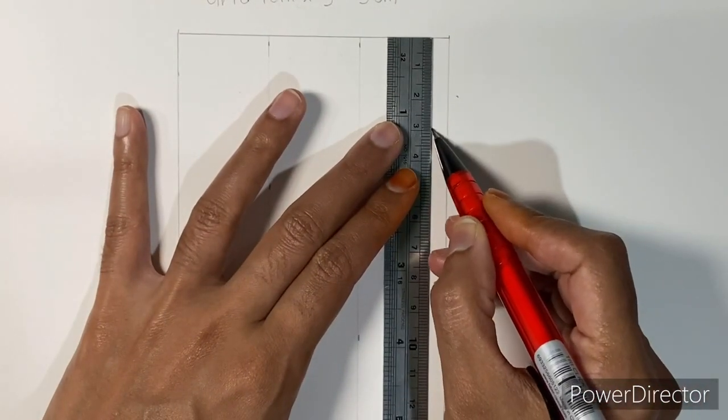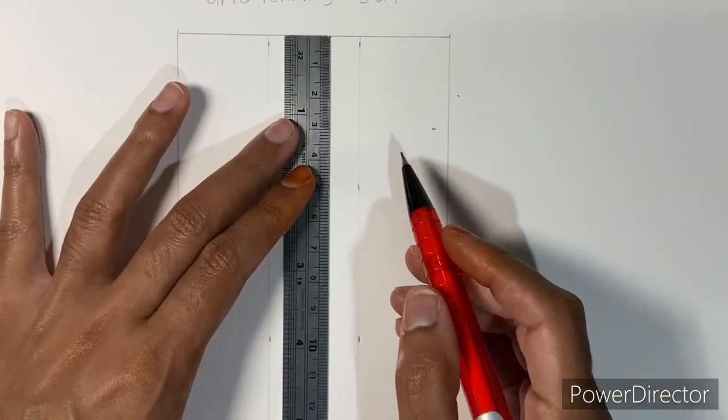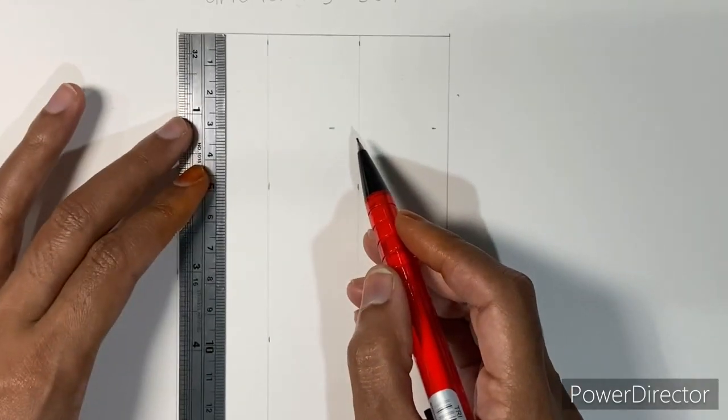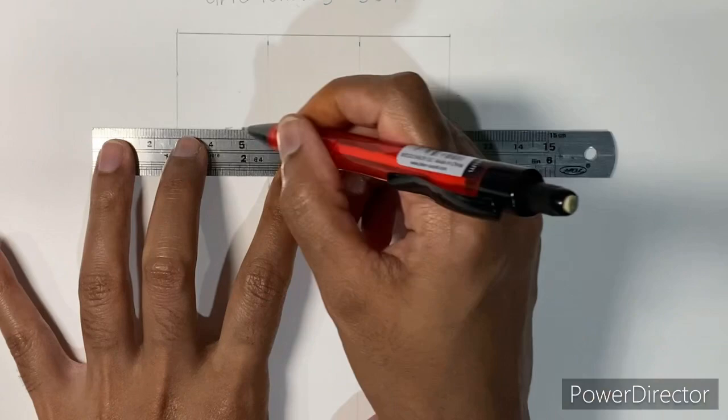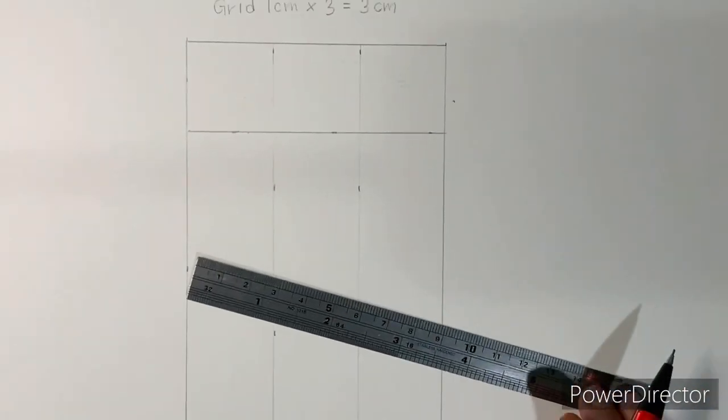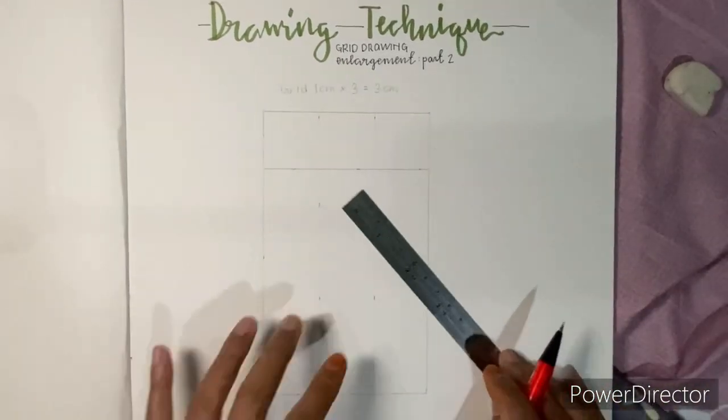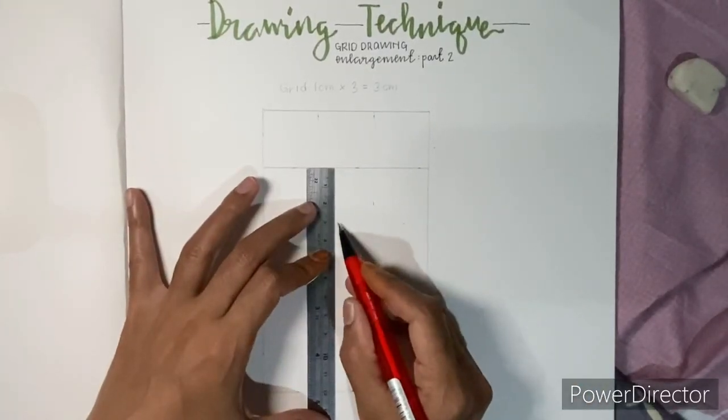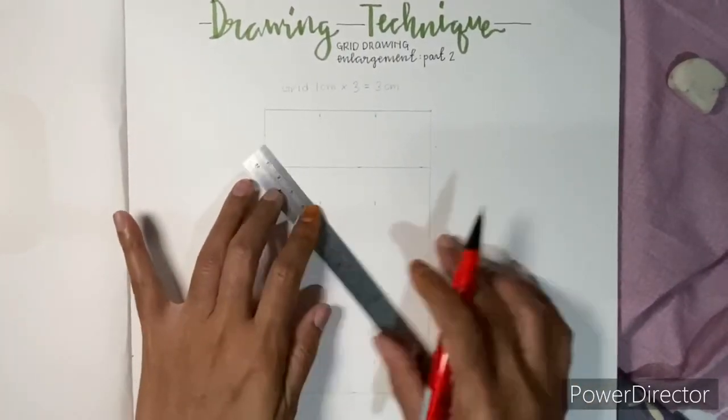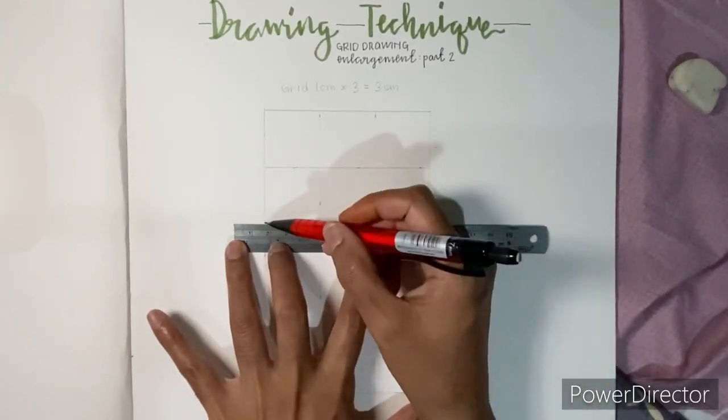Same thing goes vertically. Measure 3cm. Get a few marks and connect the marks to get a straight line. Again, I have to remind you, make sure your grid lines are very, very light because you are going to erase it later.